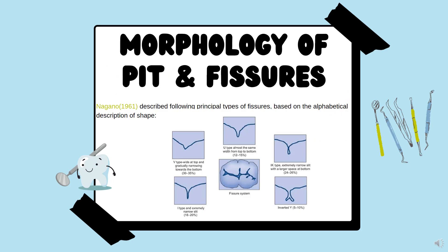Moving on to the morphology of pit and fissures. Nagano in 1961 described the following principal types of fissures based on alphabetical description of the shape: V shape, U shape, IK shape, inverted Y, and I type fissure system. The caries-prone type is the I type, which is caries susceptible, whereas V type and U type are caries resistant.